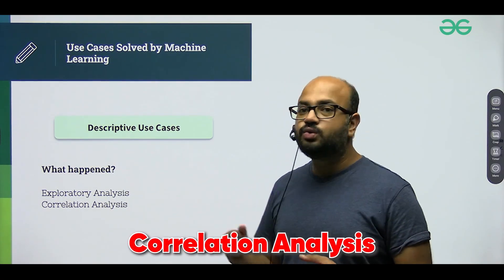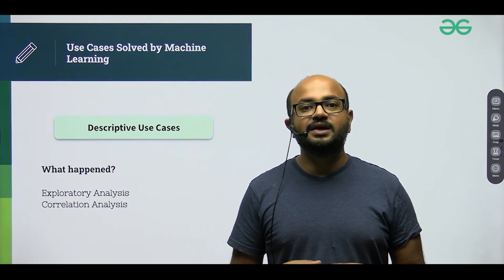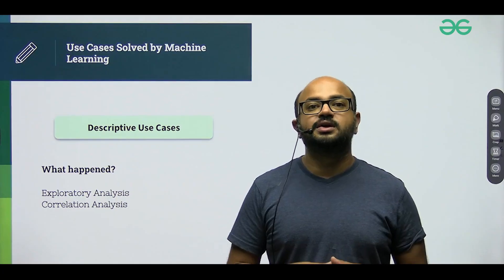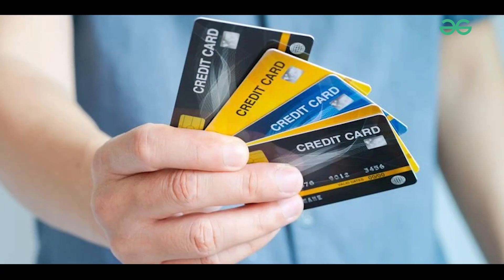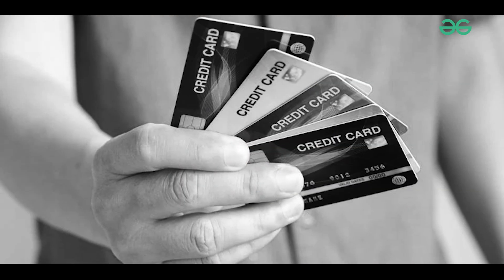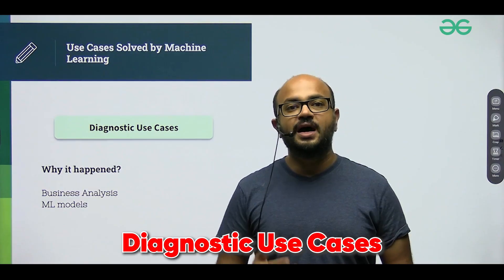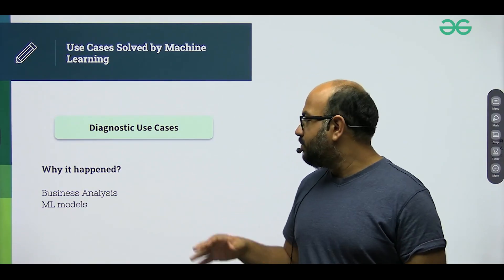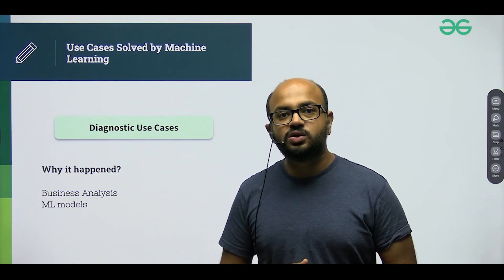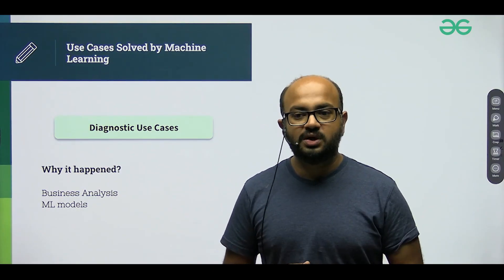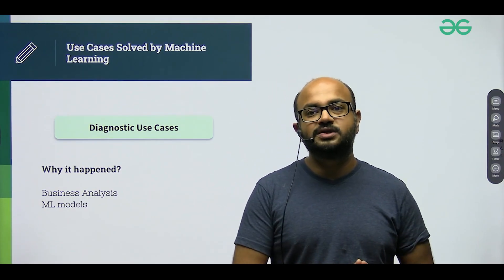This would be equivalent to your correlation analysis. Basically, you are trying to understand that in the past, as a company, to whom were you giving credit cards and to whom were you declining credit cards. Diagnostic use cases talk about why it happened. You will be doing not just the analysis of data, but also the business process — why some people were accepted and why some people were not accepted.